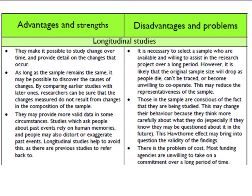However, there are some disadvantages with longitudinal research, and they are mainly practical ones. It might be very difficult to select a sample who are available and willing to assist over a long time. As the research progresses, the original sample size is likely to drop as people die, can't be traced, or become unwilling to cooperate — this has an impact on the representativeness of the sample. This particular problem is known as sample attrition. Also, because people are conscious of being studied, this might increase what sociologists call the Hawthorne effect. And obviously, this is a much more expensive way of doing research than simply doing a snapshot at one particular point in time.